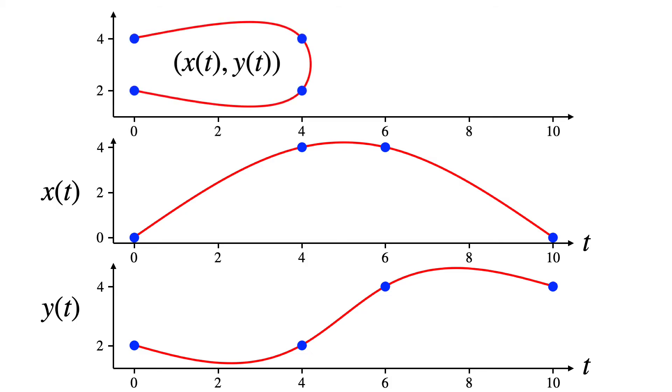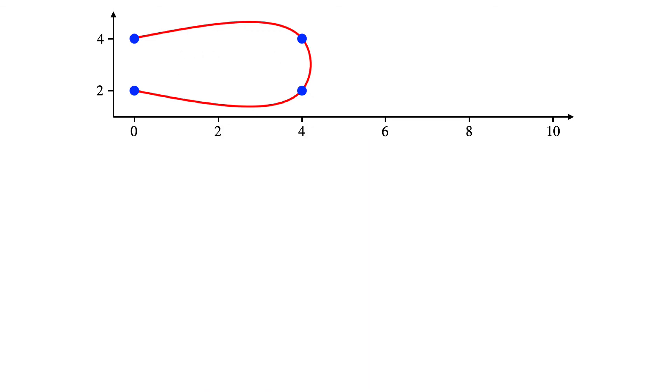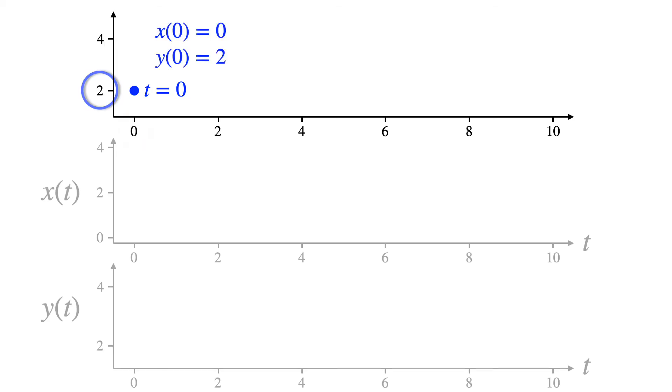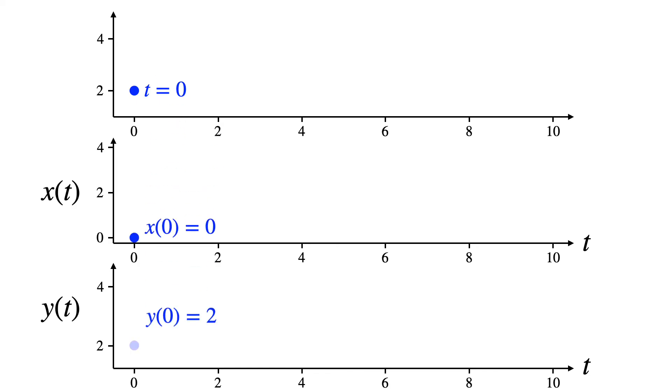So that sounds tricky, but creating 2D spline curves is actually very easy. Each control point corresponds to a different point in time. Let's start with the first one. This control point defines two different constraints. X is 0 at time T equals 0, and Y is 2. These two constraints define control points for our X and Y splines.